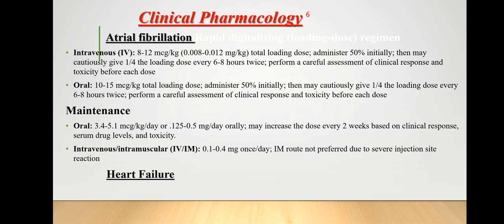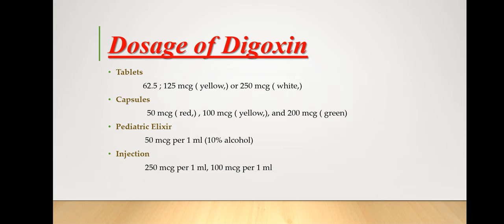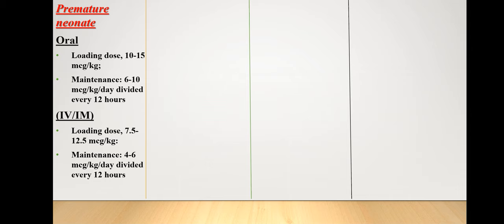In heart failure conditions, 0.125 to 0.25 milligrams orally once daily is used, and no loading dose is required. Digoxin is available in tablets from 62.5 micrograms to 0.25 milligrams, capsules of 50 to 250 micrograms, liquid of 50 micrograms per milliliter, and a 250 microgram formulation is also in use for therapeutic effect.